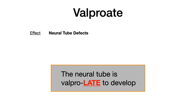Valproate causes neural tube defects — this is the third or fourth anti-epileptic we've seen with a teratogenic effect. The mnemonic: the neural tube is 'valprolate' to develop, almost identical to the folate antagonist mnemonic. Folate antagonists and valproate both have that '-ate' sound at the end, reminding you that the neural tube is late to develop.